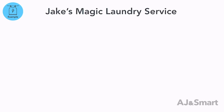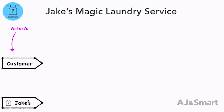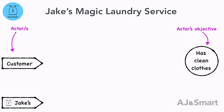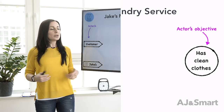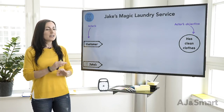Let's look at how this applies in our example: Jake's magic laundry service. We start by writing the actors on the left — in this example, the customers who need to get their laundry done, and us as a company: Jake's magic laundry service and Jake's delivery drivers. Then the objective: for Jake's magic laundry service, the customer's objective is to end up with their clothes delivered back to them clean. Keep it as simple as you can.